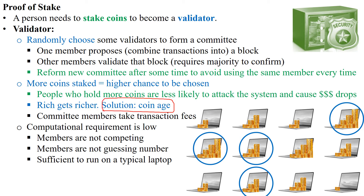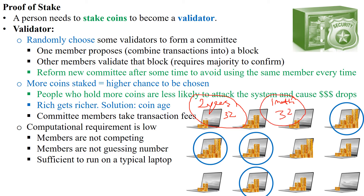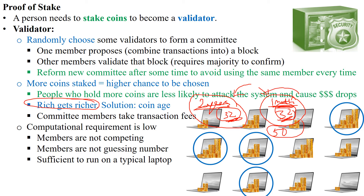The solution is to introduce coin age. For example, if you staked 32 coins two years ago and someone else staked 32 coins just one month ago, instead of giving both 32 lottery tickets each, we consider the duration of staking as well. After two years, you remain at 32 lottery tickets, but someone who staked just one month ago might be given 50 tickets. This gives recently-staked coins higher chances to be chosen, solving the rich-gets-richer problem.